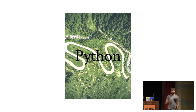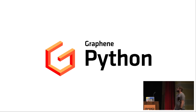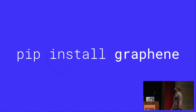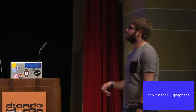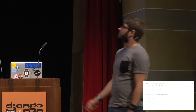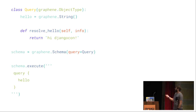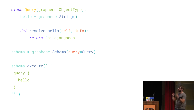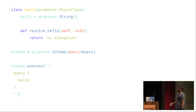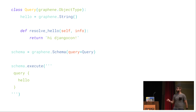We're at a Python conference, so obviously we want to use this with Python — and we can. There is a library called Graphene. You install it with pip install graphene, then import it and create a class for the query. Everything is typed in GraphQL, so even the root query is a type — an object type. You define a query with a field, and for each field you create a resolver function or method that fetches and returns the data.